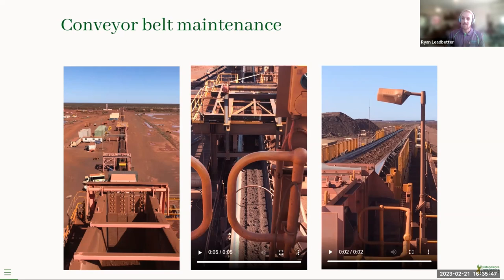Engineers try their hardest to make sure that doesn't happen. They have planned maintenance periods, usually six to eight weeks apart, and they try to decide whether or not to change a belt in that period. They have to argue their case because there are other components that need changing, so they need a justified reason for why that belt must be replaced in that particular shutdown. One of the most critical components on the conveyor is the actual belt itself.